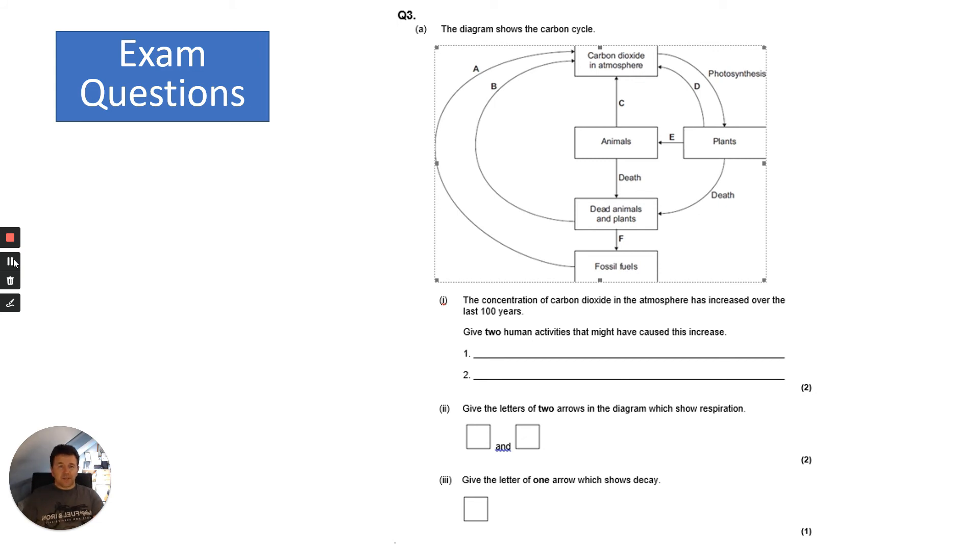Question three - another diagram of a carbon cycle, and this time they've got some letters on it. It says the concentration of carbon dioxide in the atmosphere has increased over the last 100 years. Give two human activities that might have caused this increase, and give letters to show respiration and decay. I'd like you to pause the video and have a go.